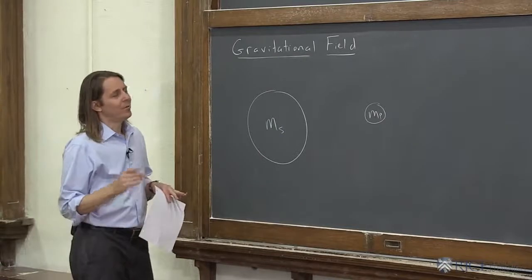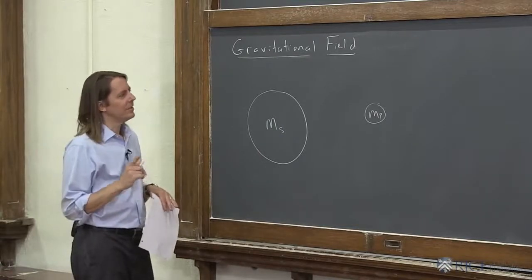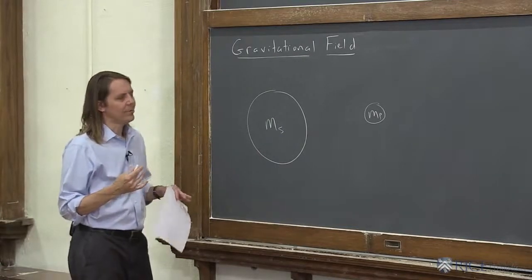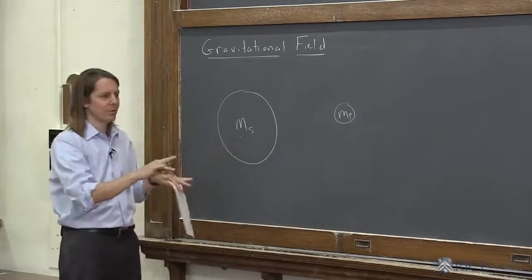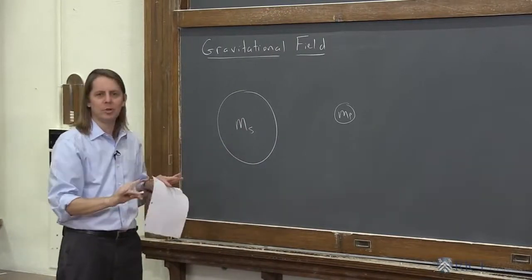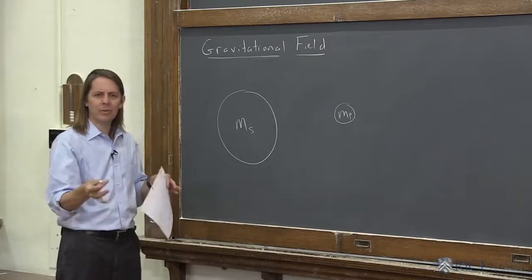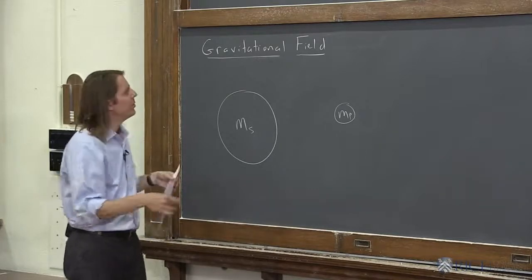but what bothered Newton and other scientists at the time is how does that work? The two things aren't touching each other. They're very far apart from each other. There's nothing in between. There's no strings pushing. How is it possible that these two things can pull on each other?